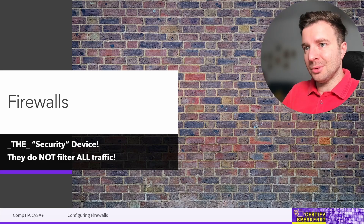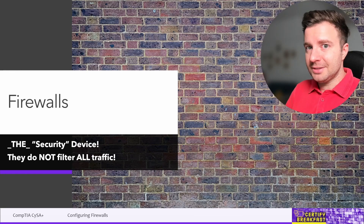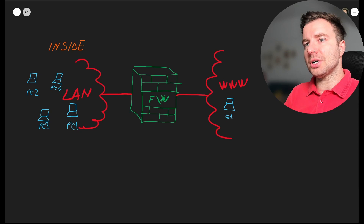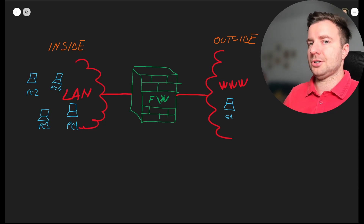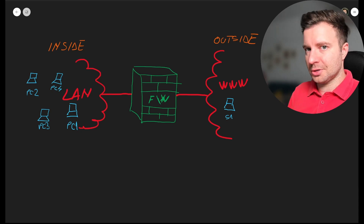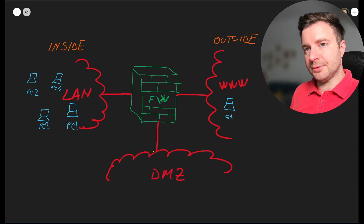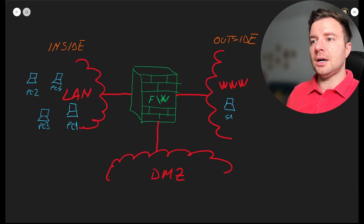Now, how should we use a firewall? While we can't ignore perimeter security, placement matters. Most firewall designs use about three zones: first, the internal zone — your local network, the highest security zone; second, the external zone — typically the internet, where threats come from; and third, the DMZ — the demilitarized zone — connected to the same firewall. The DMZ is still your network but dedicated to services exposed to the internet.